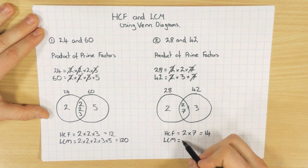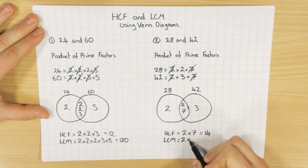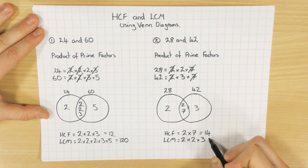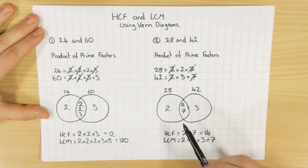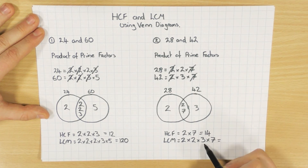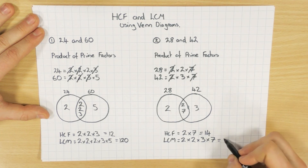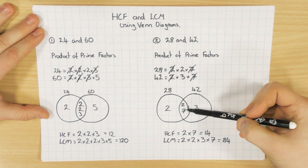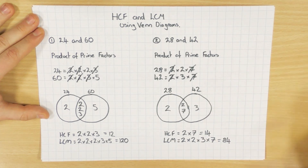And then to find the lowest common multiple, we multiply all the numbers in the diagram: 2 × 2 × 3 × 7. 2 × 2 is 4, times 3 is 12, and 12 × 7 is 84. So the highest common factor, you multiply the centre. The lowest common multiple, you multiply all the numbers in the diagram.